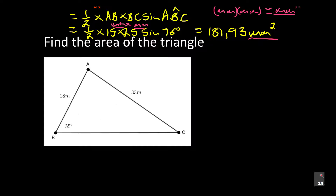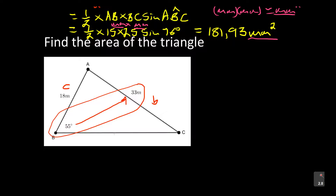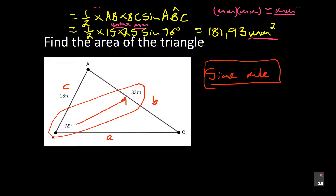There is something interesting here — I need to go through other forms for finding the area. Look at this pair: it has an angle and a side together. If this is small b, that side is small c, and this side is small a. When you have that pair, you think of the sine rule. The sine rule states: sine A over a equals sine B over b, which equals sine C over c.